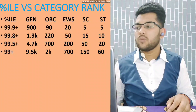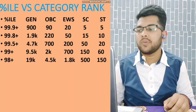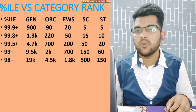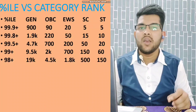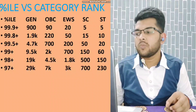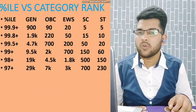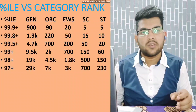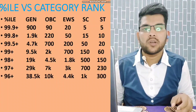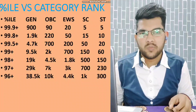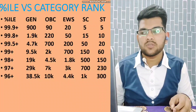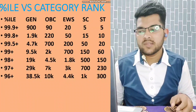For 98+ percentile: General rank under 19,000, OBC under 4,500, EWS under 1,800, SC under 500, and ST under 150 — 100% sure. For 97+ percentile: CRL rank under 29,000, OBC under 7,000, EWS under 3,000, SC under 700, and ST under 230. For 96+ percentile: General rank under 38,500, OBC under 10,000, EWS under 4,400, SC under 1,000, and ST under 300.